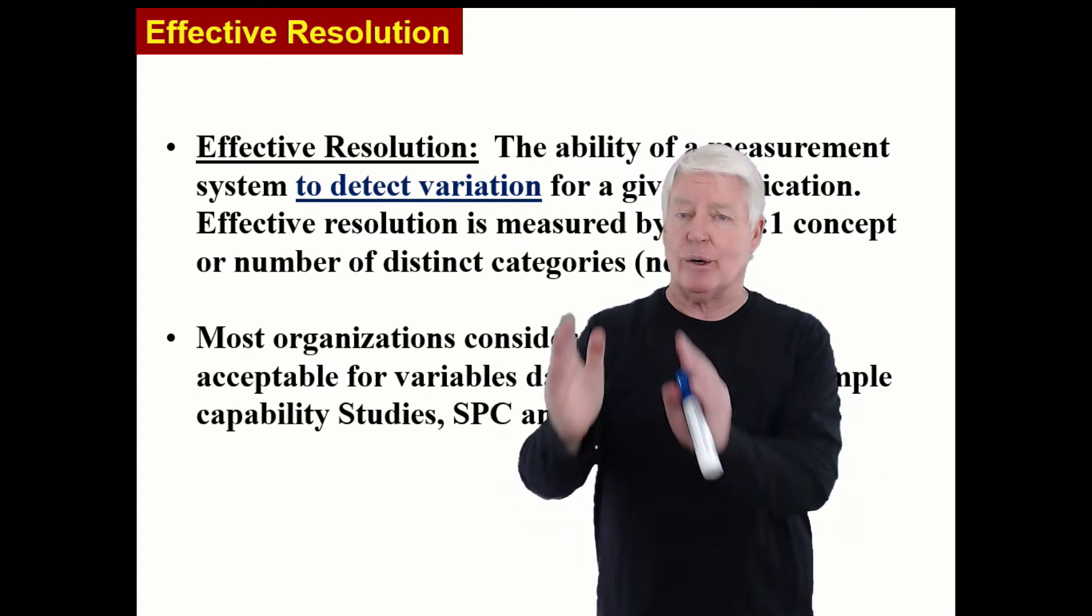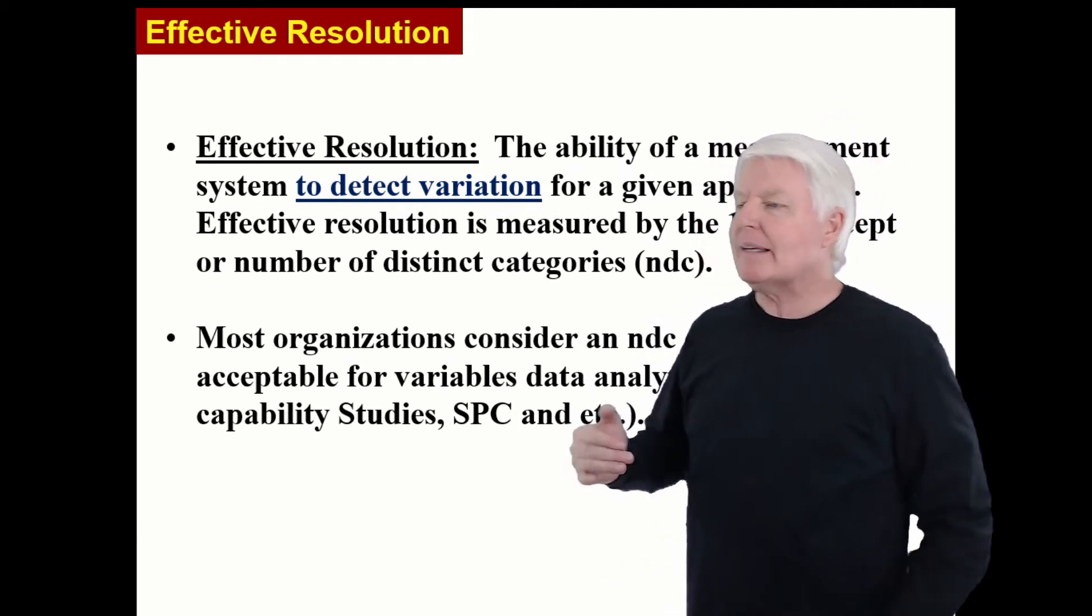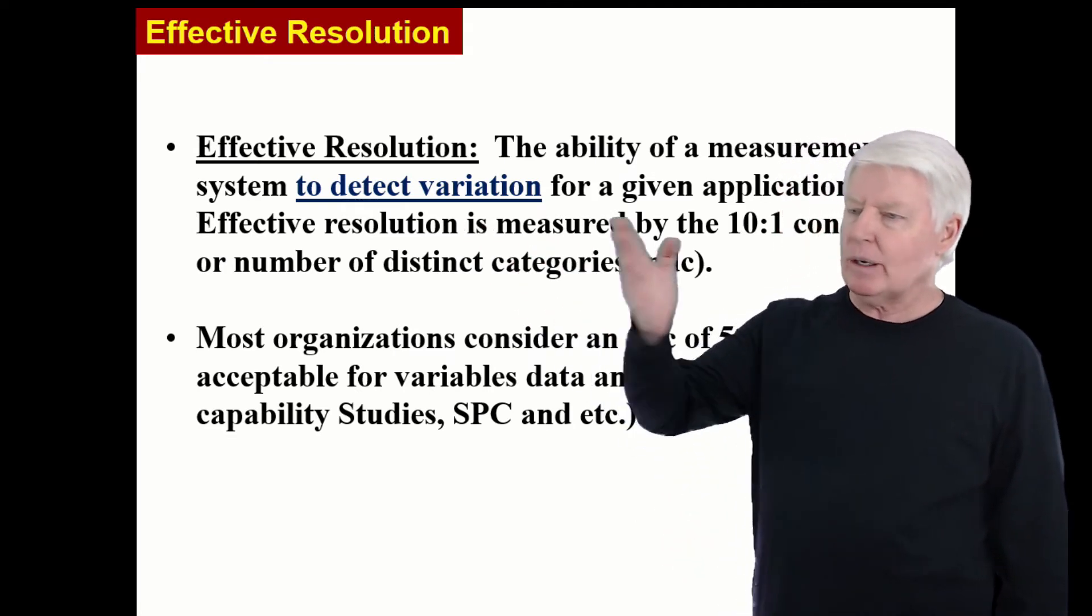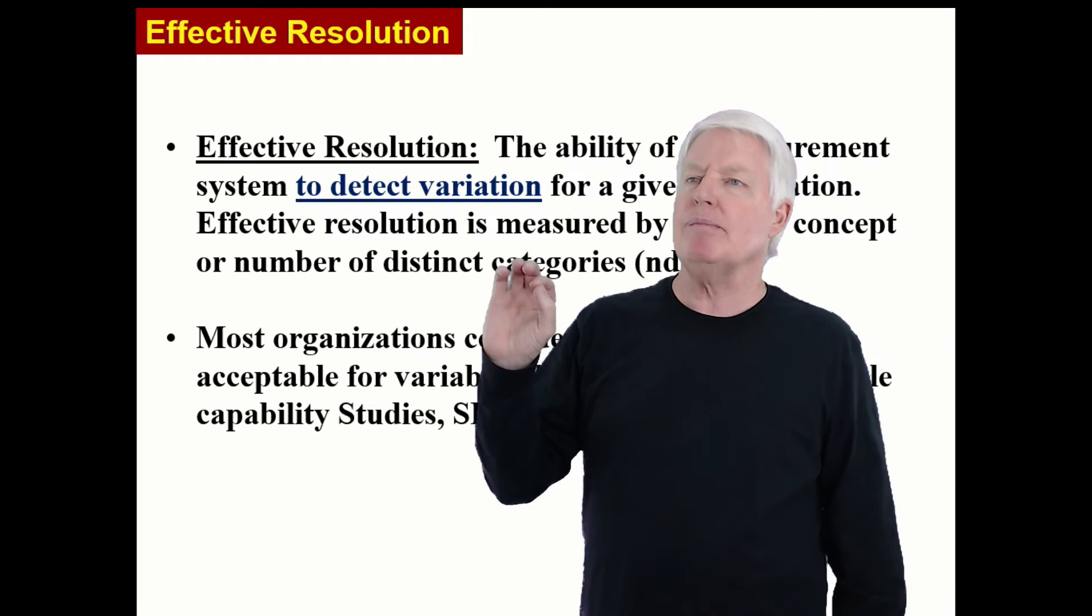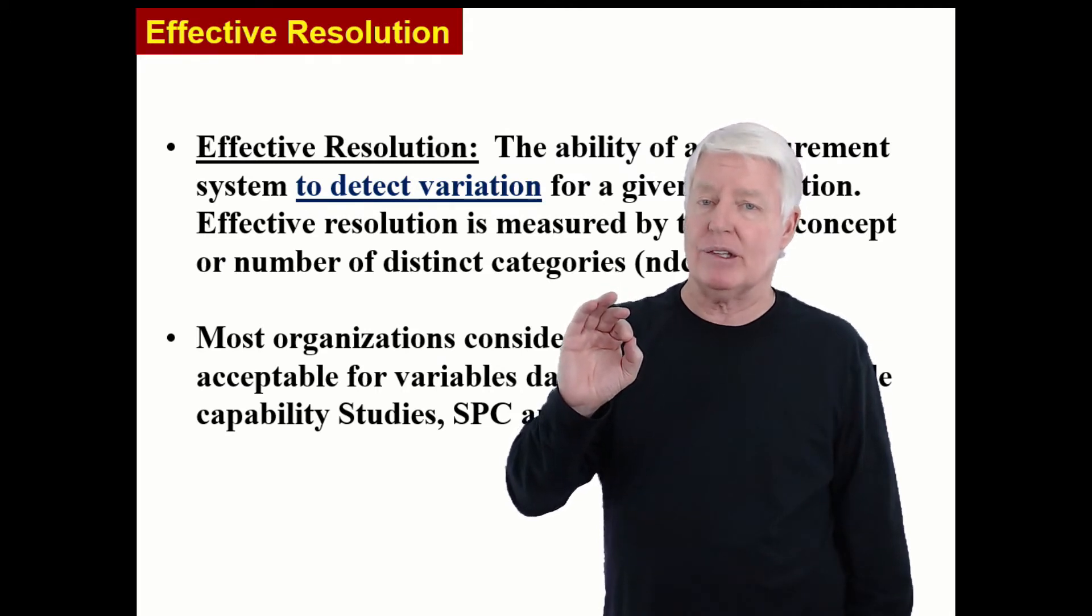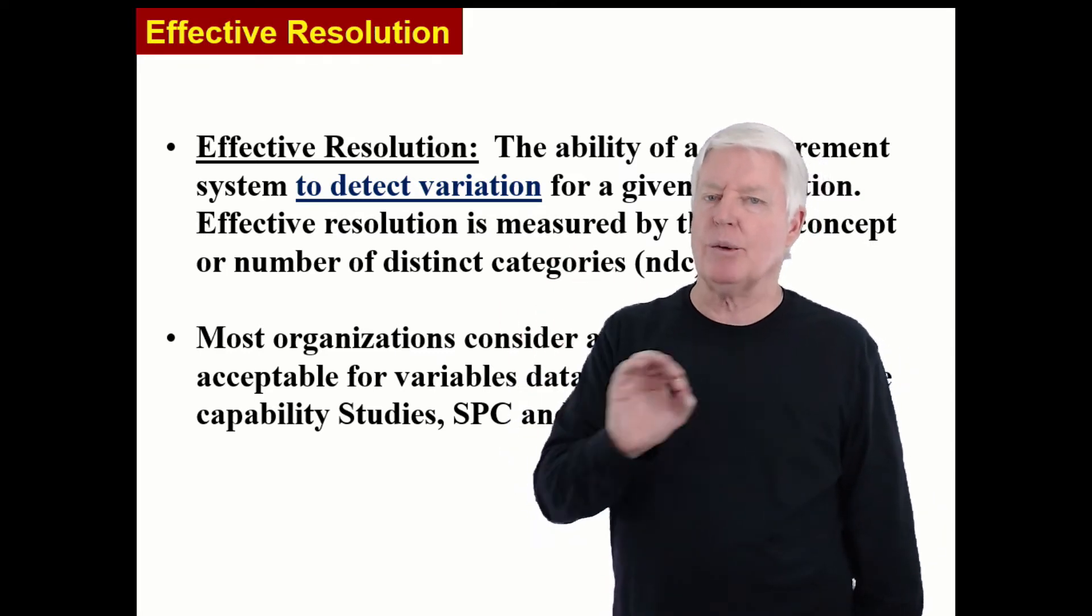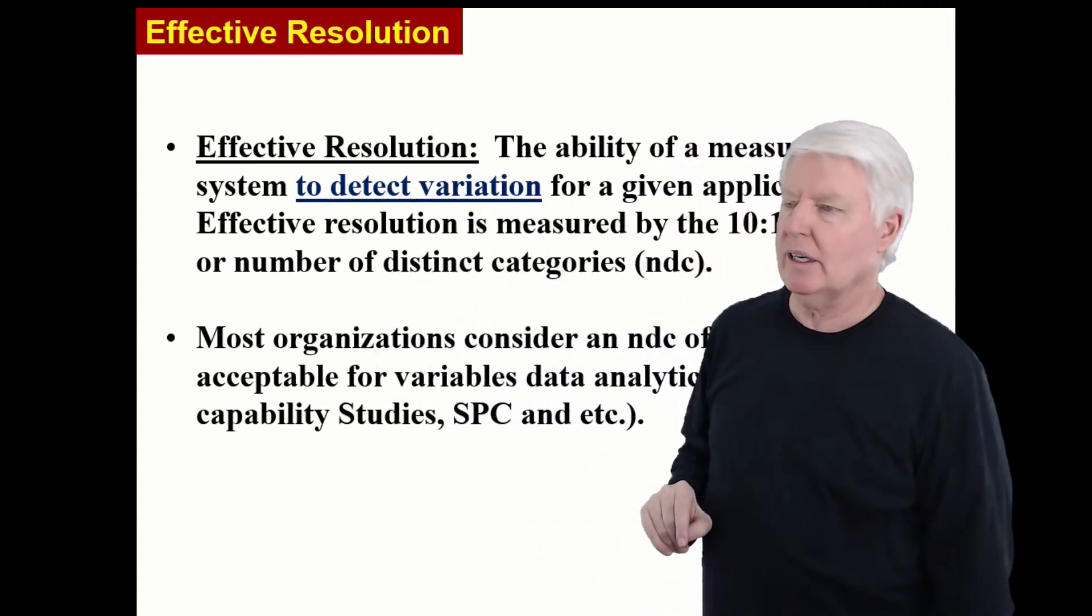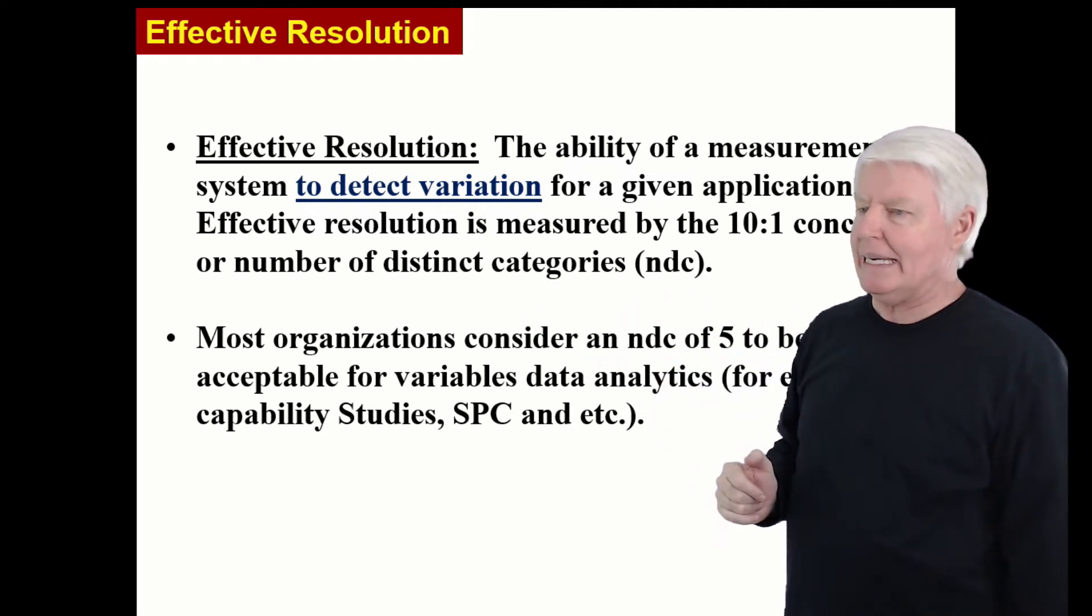One way of thinking of the number of distinct categories is how many columns did I have on my histogram. I'm going to get more specific about that later. But that's how you can think of it. And I remember I said you need at least five bars on your Instagram to make it worth anything. The 10 to 1 rule, on the other hand, is if you have a drawing and it says plus minus five one hundredths, you have to measure it with something with 10 times that resolution, which would be five thousandths. That's the 10 to 1 rule.